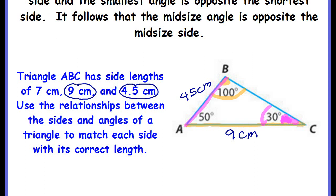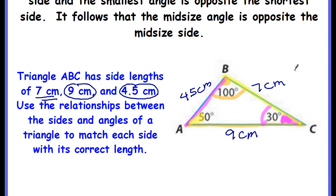It follows that the remaining ones are going to be opposite each other. Angle A is the middle or medium size angle, and the only side that doesn't touch angle A is BC. So BC is the opposite side, and we're going middle to middle — seven centimeters. And that's all there is to it.